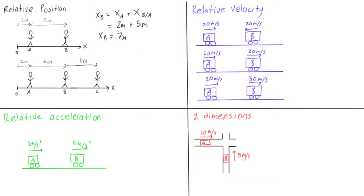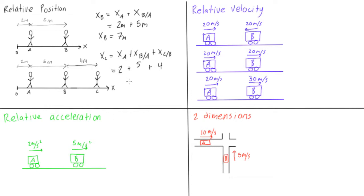What if we wanted to find the position of person C? It's the position of C with respect to B, plus the position of B with respect to A, plus the position of A with respect to the origin. So x of C equals the position of A, plus position of B with respect to A, plus position of C with respect to B. That's 2 meters plus 5 meters plus 4 meters, giving us 11 meters — the position of C with respect to the origin.